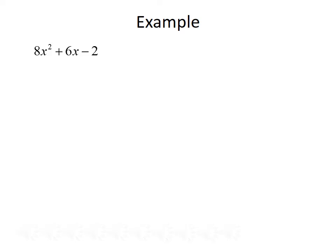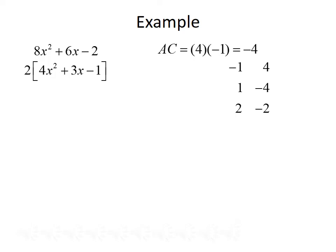For our last example, we want to completely factor 8x squared plus 6x minus 2. First, we factor out common monomials. Each term can be divided by 2, so we factor out a 2, giving 2 times 4x squared plus 3x minus 1. Now we factor 4x squared plus 3x minus 1. Multiplying the first and last coefficients: 4 times negative 1 gives negative 4. Listing factors of negative 4: negative 1 and 4, 1 and negative 4, and 2 and negative 2. Adding them gives 3, negative 3, and 0. The factors we're looking for are negative 1 and 4.